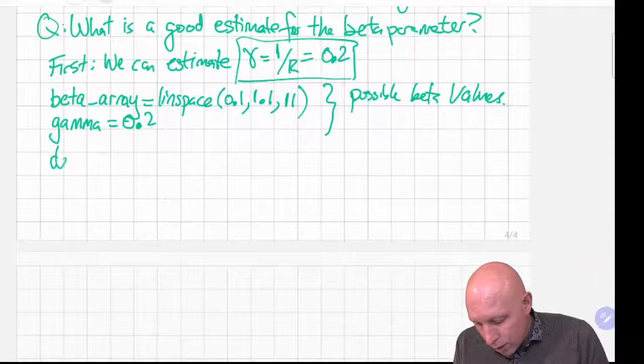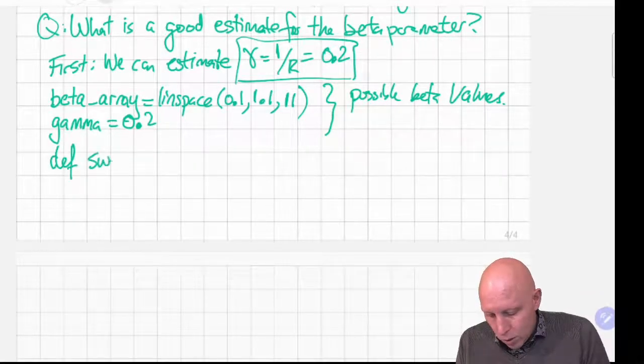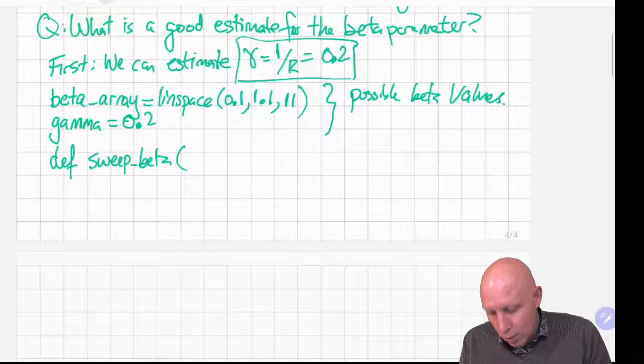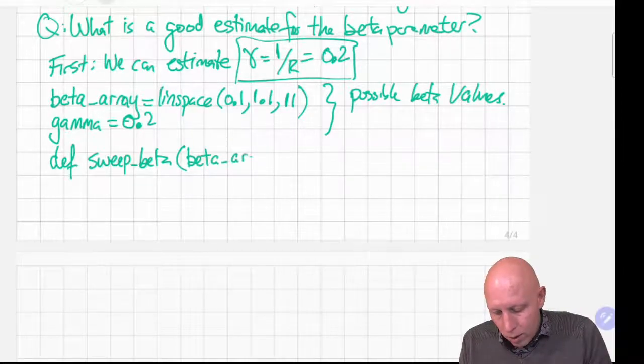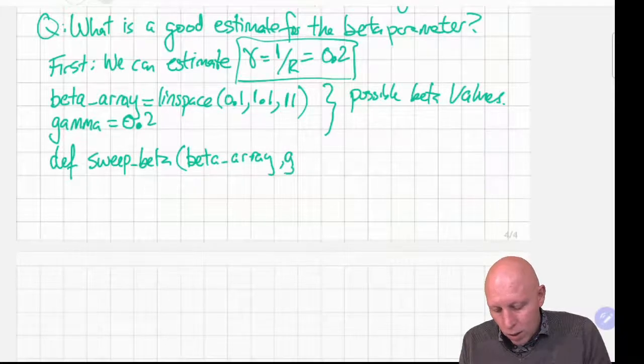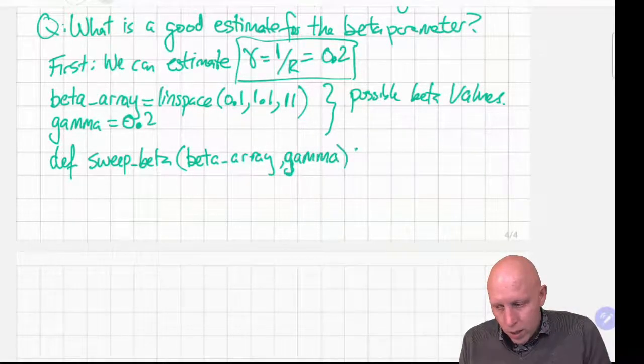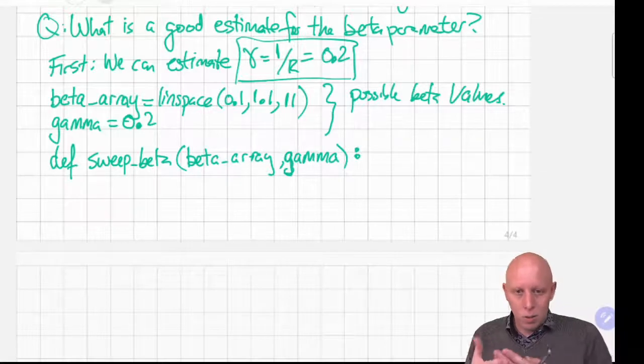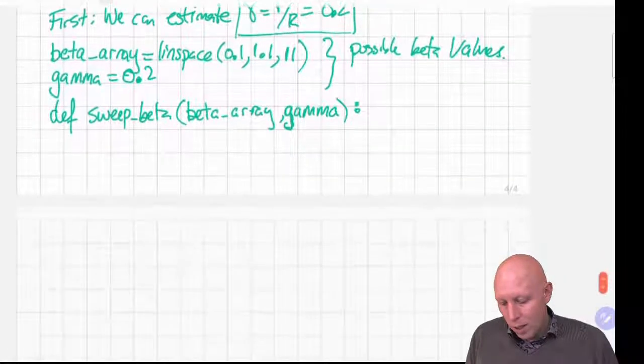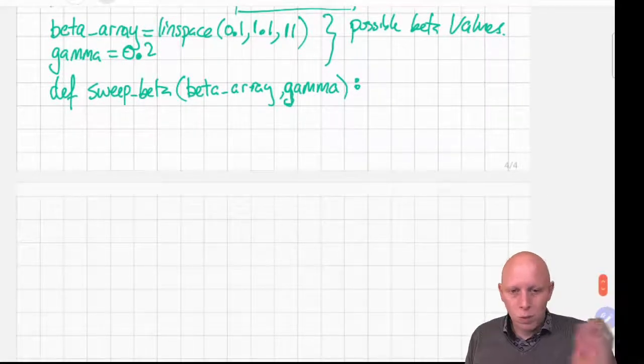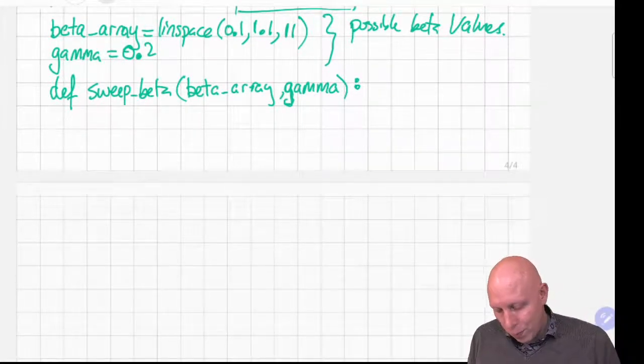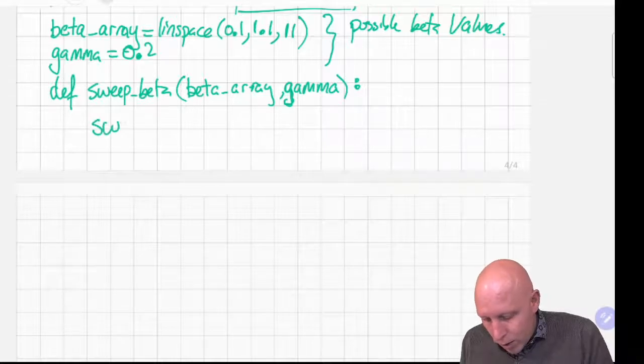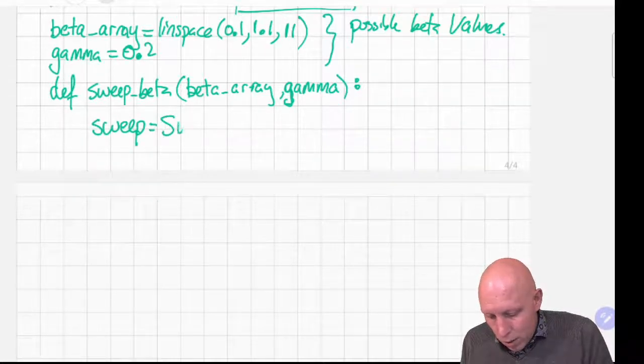And now we're going to define a function. We're going to define sweep beta that takes into account what the beta array is and takes in what gamma is. We could pass in different values of gamma and see what this function looks like. Right now we're focusing on gamma's 0.2 and shortly we'll change that value of gamma. To collect the information we create a sweep series.